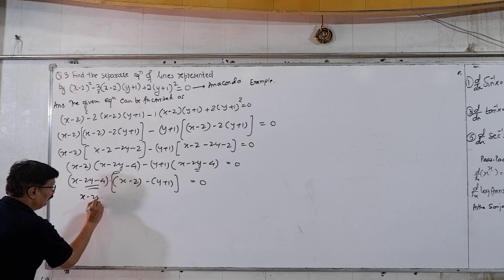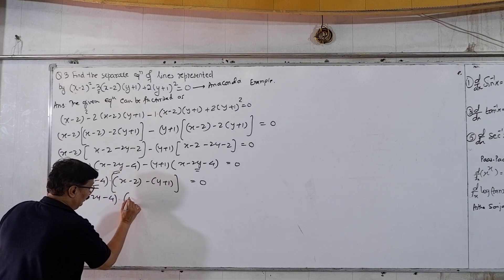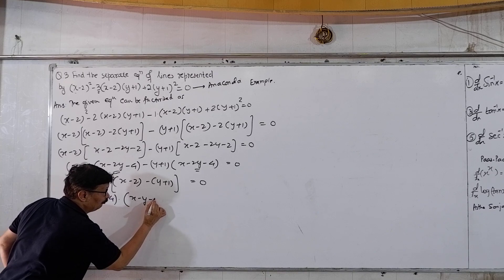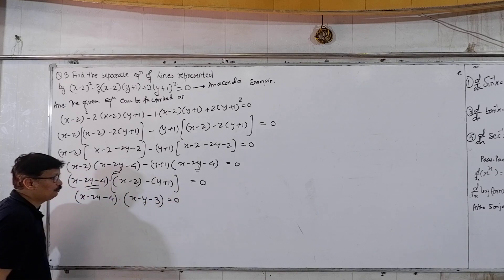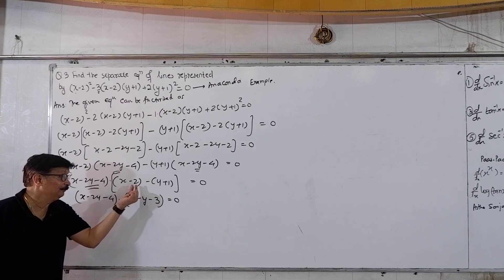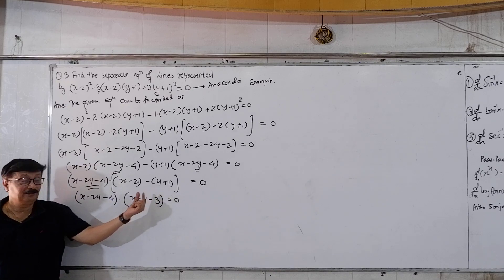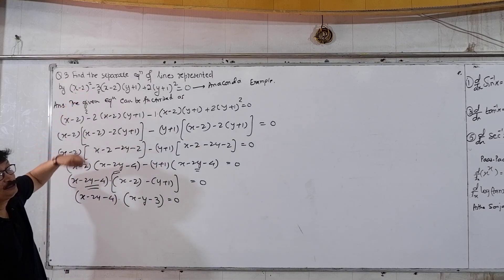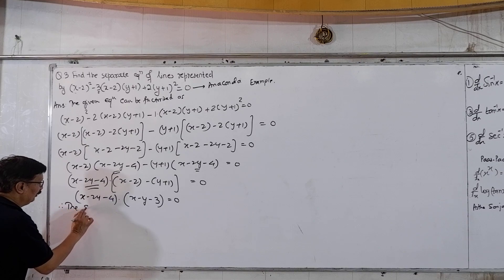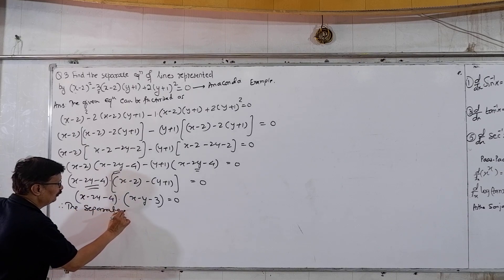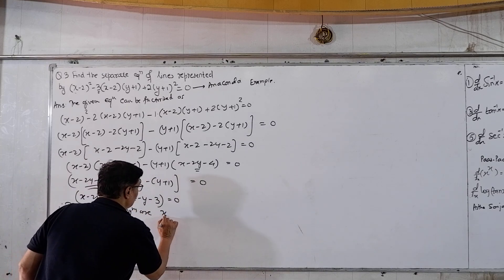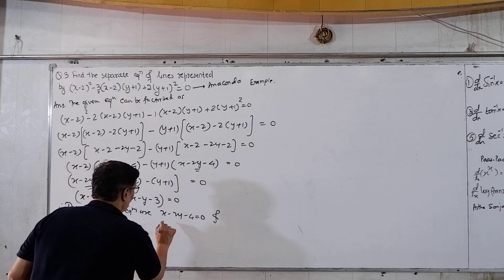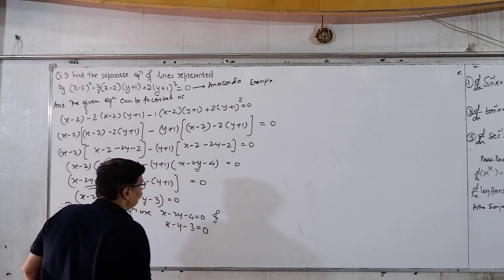So this term is (x minus 2y minus 4) multiplied by (x minus y). This gives x, minus y, minus 2, and minus 1 is minus 3 — so (x minus y minus 3) equal to 0. Therefore the separate equations are: x minus 2y minus 4 equal to 0, and x minus y minus 3 equal to 0.